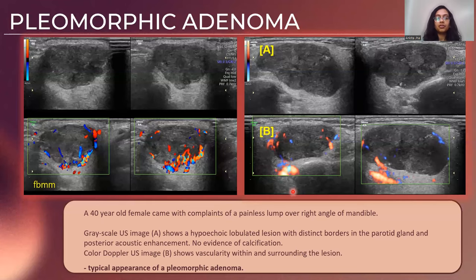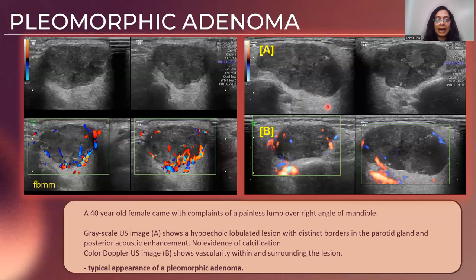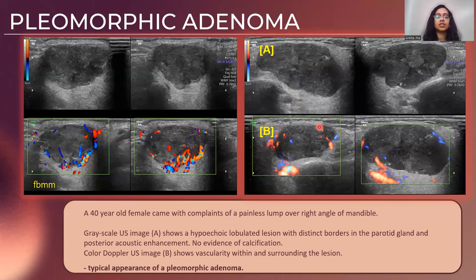Here we have a 40-year-old female with complaints of a painless lump over the right angle of the mandible. On ultrasound, image A shows a well-defined hyperechoic lobulated lesion with distinct borders giving posterior acoustic enhancement in the parotid gland. On color Doppler images, there is increased vascularity surrounding the lesion. This is a typical appearance of a pleomorphic adenoma.